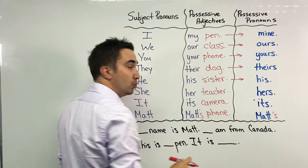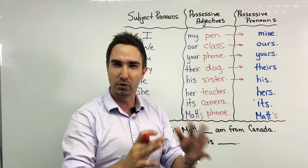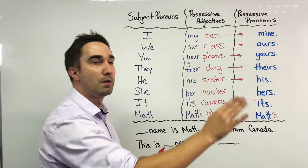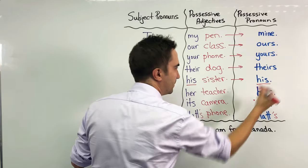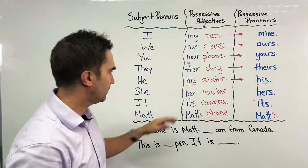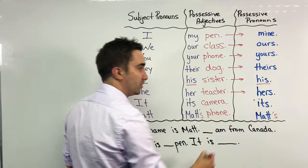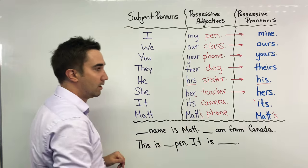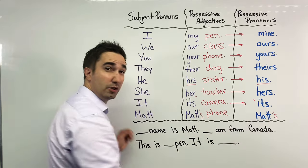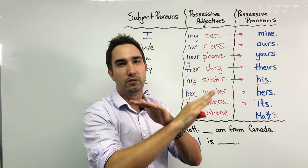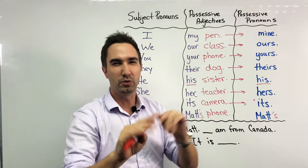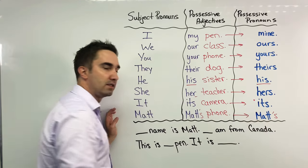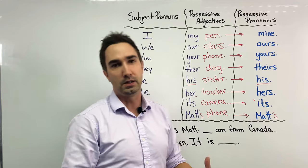His sister — whose sister is that? She is his. Okay, a little bit strange, we don't usually say that. But we can say whose pen is that? It's his. It's his pen — so these are the same. So a little bit difficult, just remember that. Her teacher — whose teacher is that? It's hers. Whose pen is that? It's hers. So we just add the S. Its camera — I put a little star here because we don't usually say that. Whose camera is that? It is its — no, we don't usually say that, a little bit strange. Or we can say Matt's phone — whose phone is that? It's Matt's.